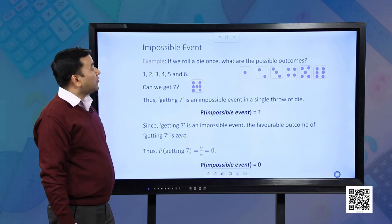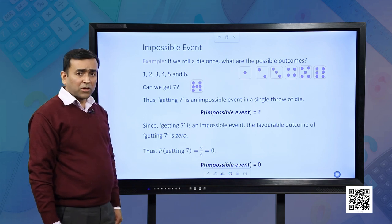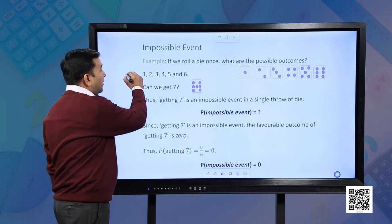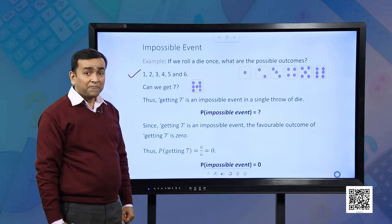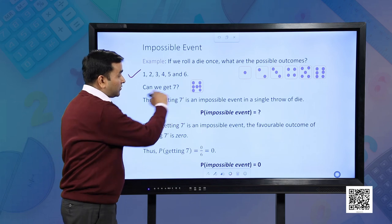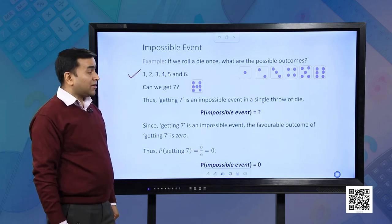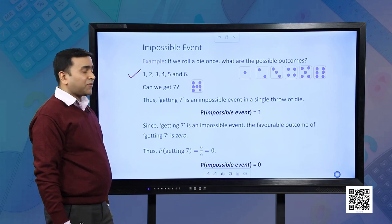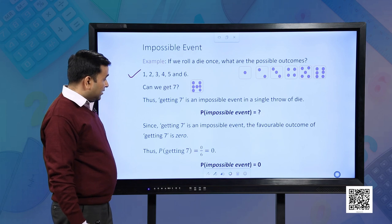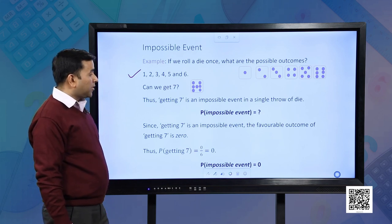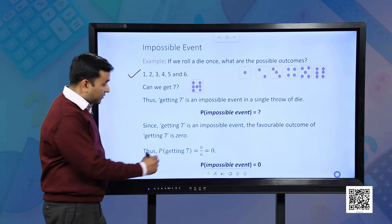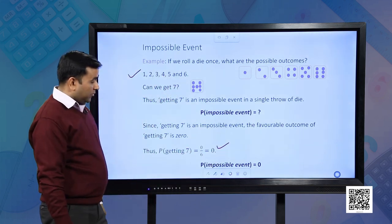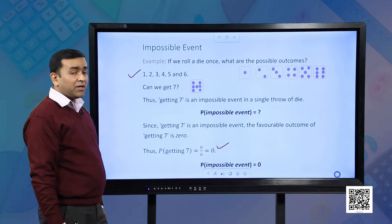Let us understand what an impossible event is. We consider the example of rolling a die once. The possible outcomes are 1, 2, 3, 4, 5 and 6. Can we ever get 7? Have you ever seen a die with 7 dots? Thus, getting 7 is an impossible event in a single throw of a die. Since getting 7 is impossible, the favorable outcome is 0, and so the probability of 7 is 0 upon 6, which equals 0. We infer that the probability of an impossible event is 0.